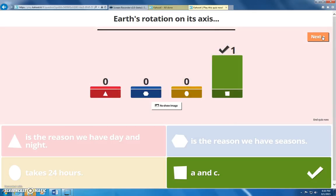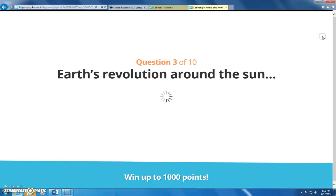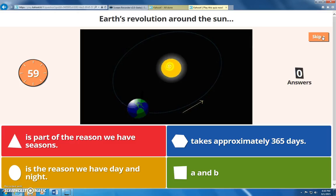Alright, a little more review. Earth's revolution around the sun is part of the reason we have seasons. It takes approximately 365 days, is the reason we have day and night, or is part of the reason we have seasons and is the reason we have day and night?